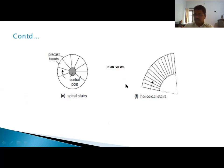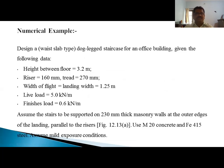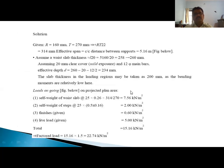Next we will move to a numerical example. Design a waist slab type dog-legged staircase for an office building given the following data: height between floors is 3.2 meters, riser is 160 mm, tread is 270 mm, width of flight equals landing width is 1.25 meters, live load is 5 kN/m and finishes load is 0.6 kN/m. Assume the stairs to be supported on 230 mm thick masonry walls at the outer edges of the landing parallel to the risers. Use M20 concrete and Fe 415 steel, assume mild exposure conditions.